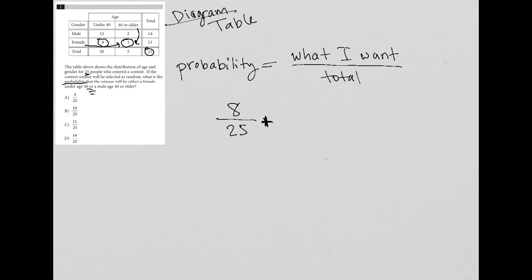So here is my female under 40 probability. This is or. And then the next thing I want is male age 40 or older. Well, that's here. There's two males age 40 or older. So two out of 25 if the winner were to come from that category.